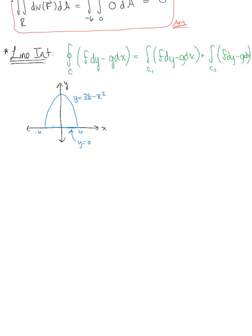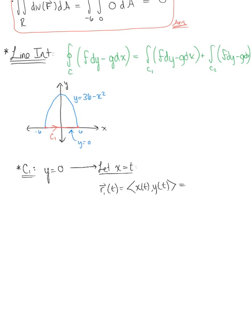Noting our counterclockwise orientation, the line along the x-axis is curve C₁, going from negative 6 to positive 6. Since this is a smooth curve we let x equal t, giving the parameterization r₁(t) = (t, 0), for t from −6 to 6.